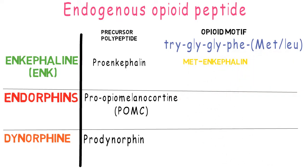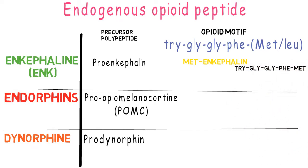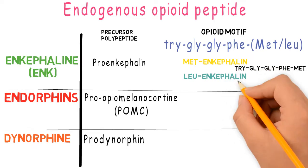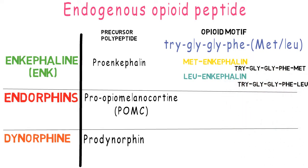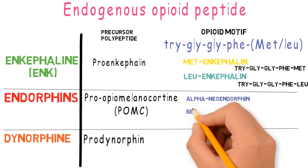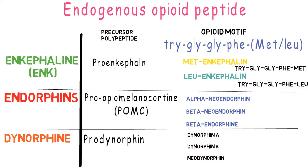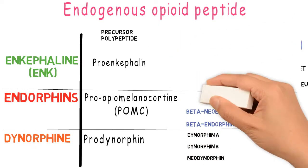The opioid motif is composed of tyrosine, glycine, glycine, phenylalanine, and alanine; the last amino acid can be either methionine or leucine. Based on this, enkephalins are divided into two types: met-enkephalin (methionine enkephalin) and leu-enkephalin (leucine enkephalin). There are three endorphins: alpha-neoendorphin, beta-neoendorphin, and beta-endorphin, with beta-endorphin being the main representative. In dynorphins, we have dynorphin A, dynorphin B, and neo-dynorphin.